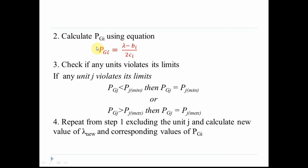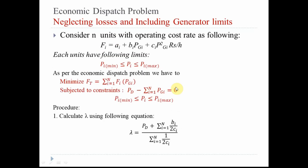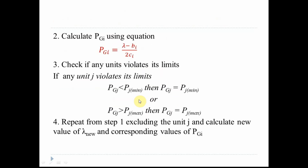The next step is to check how many units are violating their limits. For all N generating units, we check whether each PGI calculated is within its minimum and maximum limits. If they are within their limits, we proceed. If they are not, the actual corrective work begins.